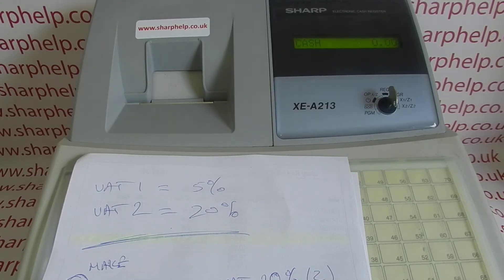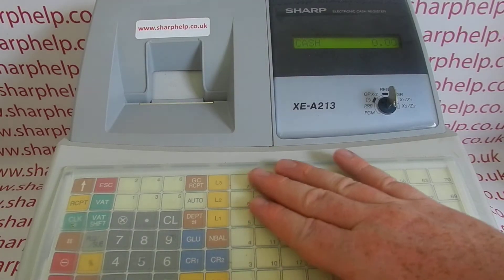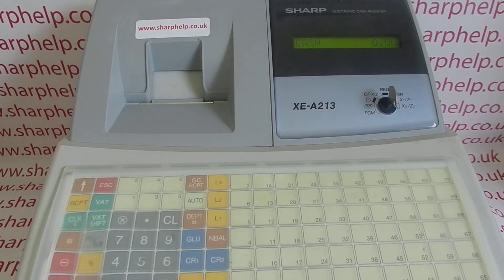In this video from Sharp Help, we're taking a look at department programming on the XEA213 register. When you program these, the departments are really important even though you don't use them that often. The buttons numbered 1 to 70 are PLUs — your individual products like a pint of carling or a cheeseburger — and they'll have a description and a price. When you set up a PLU you must assign it to a department, and it's the departments that appear on your main end-of-day Z reports and control any tax or VAT settings.